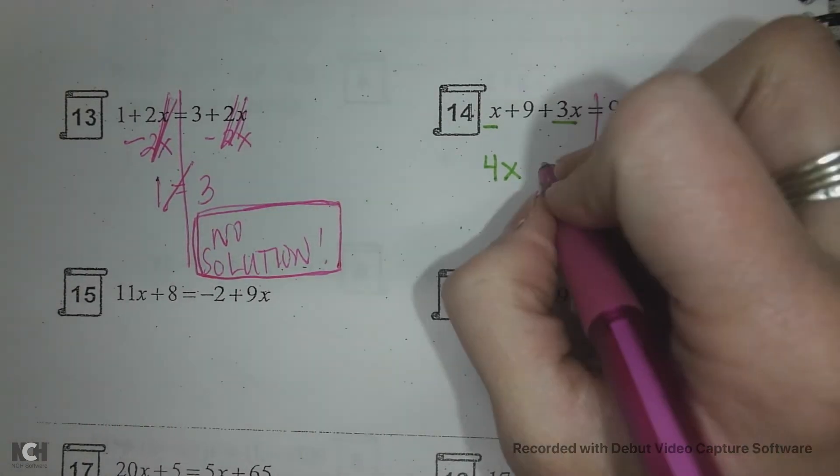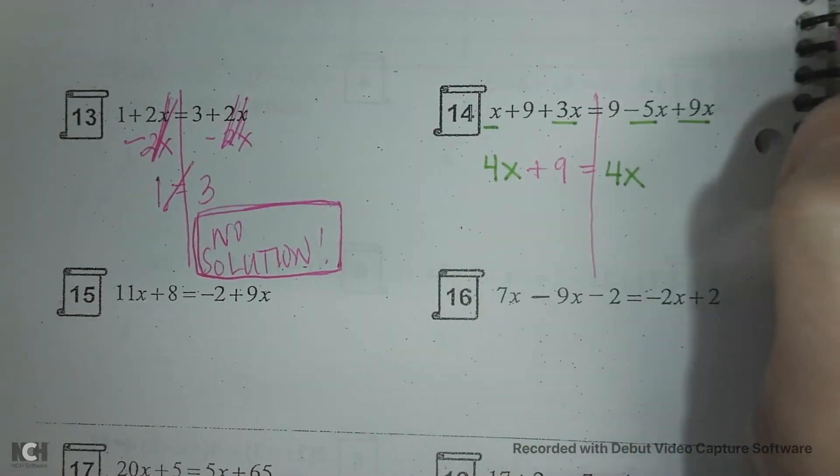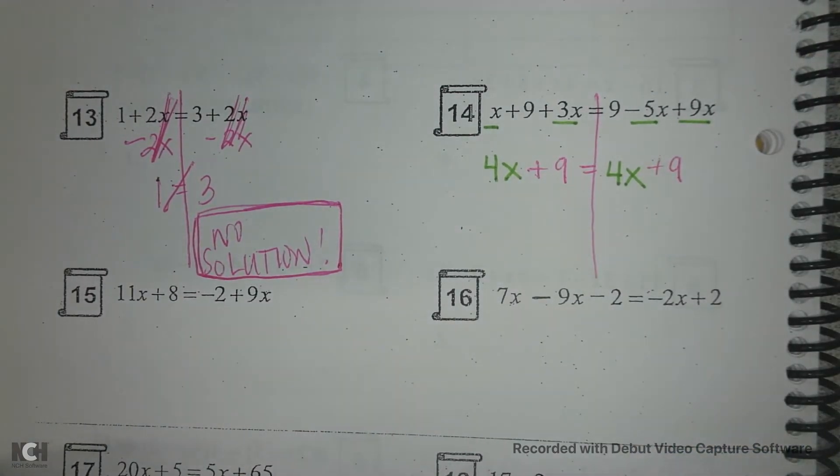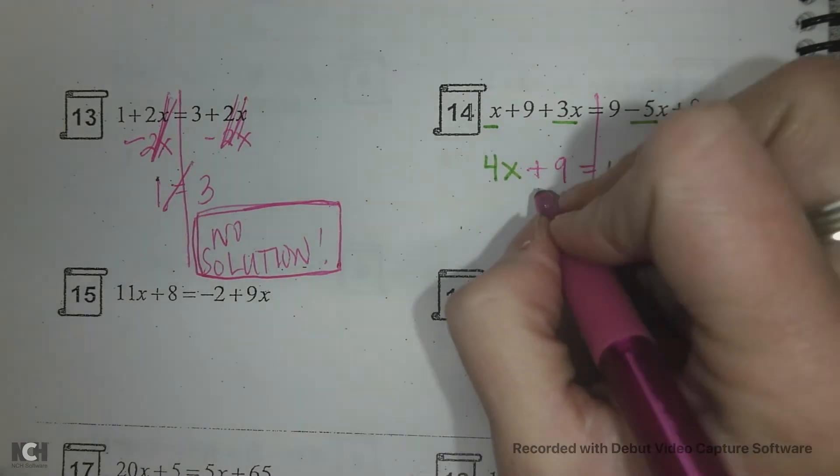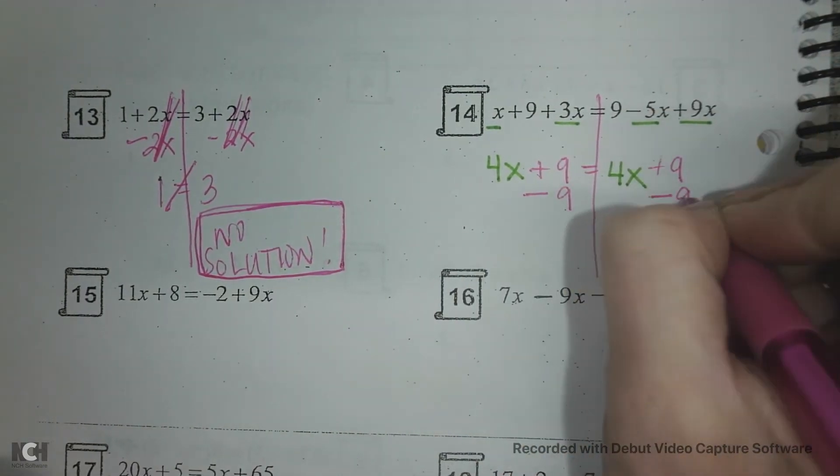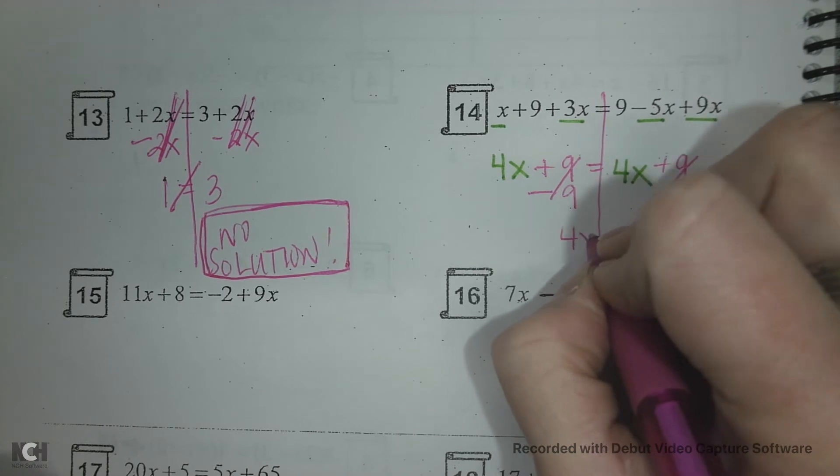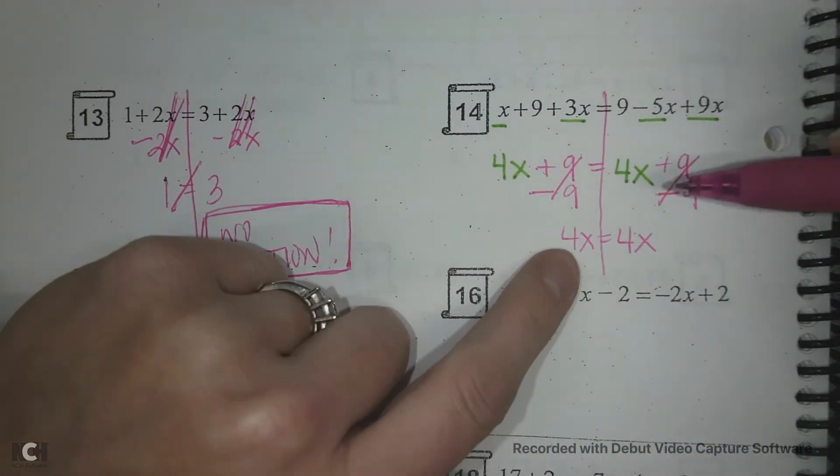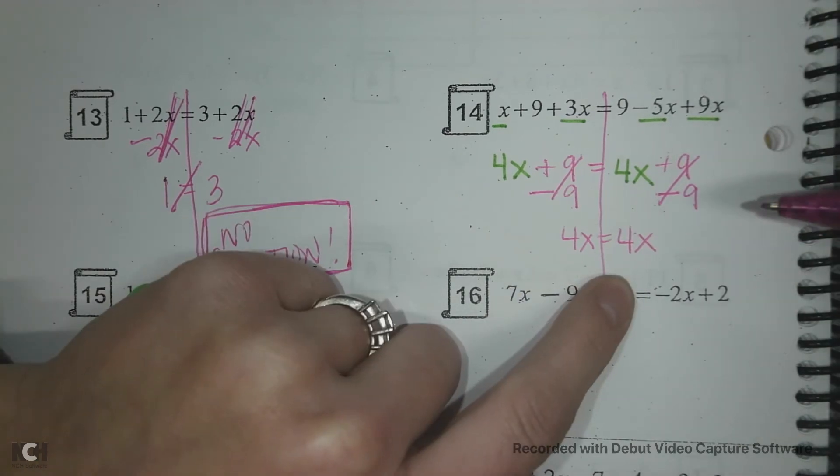Okay, I still have my plus 9 on the left and I still have my plus 9 on the right. This time I'm going to get my numbers together. So I'm going to minus 9 and minus 9. Notice that they go away. So I've got 4x equal 4x. So here, I know that 4x is equal to 4x.